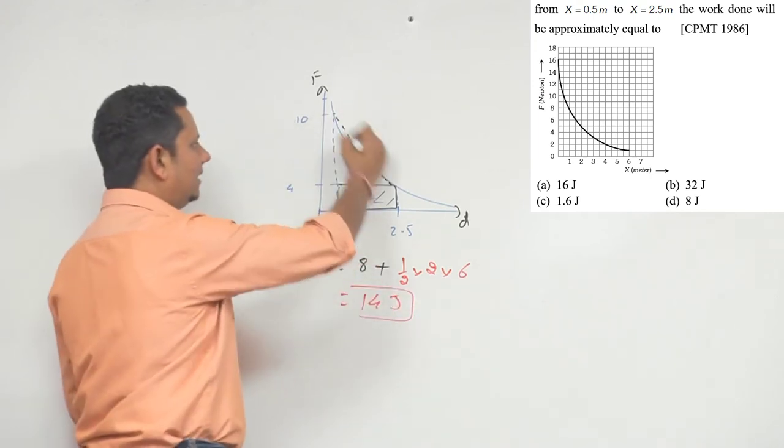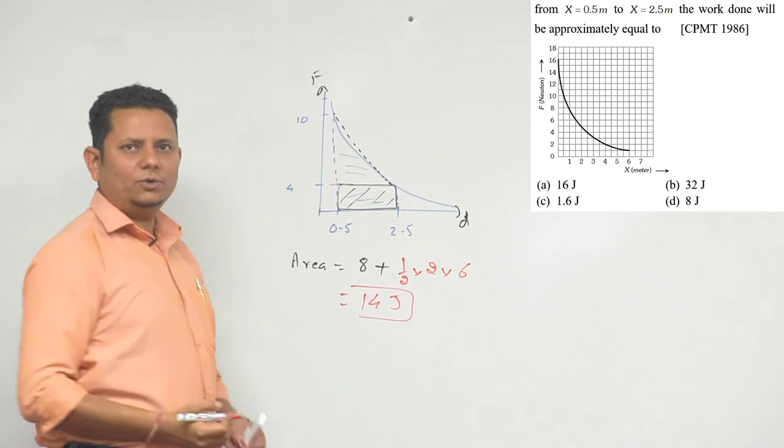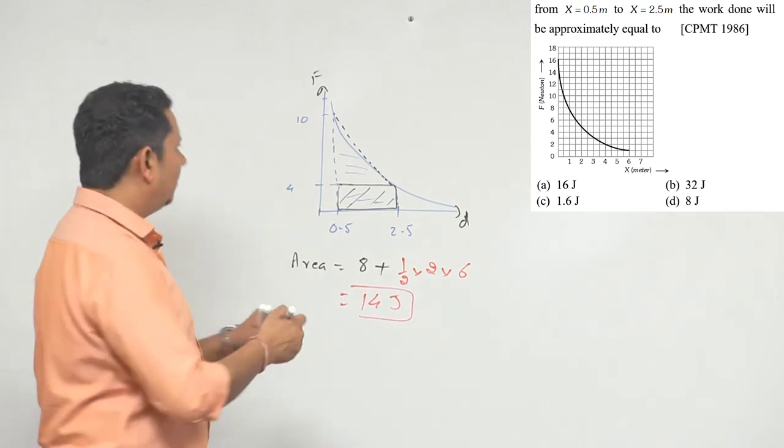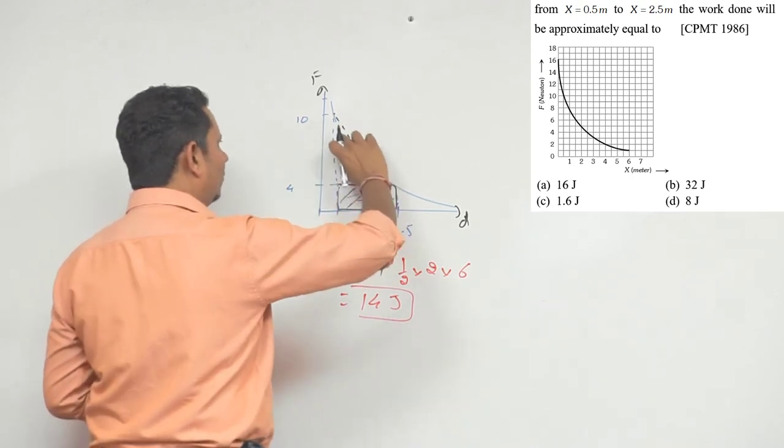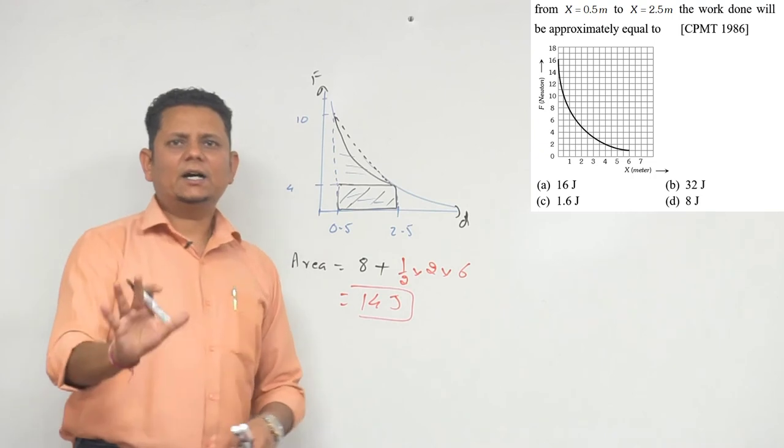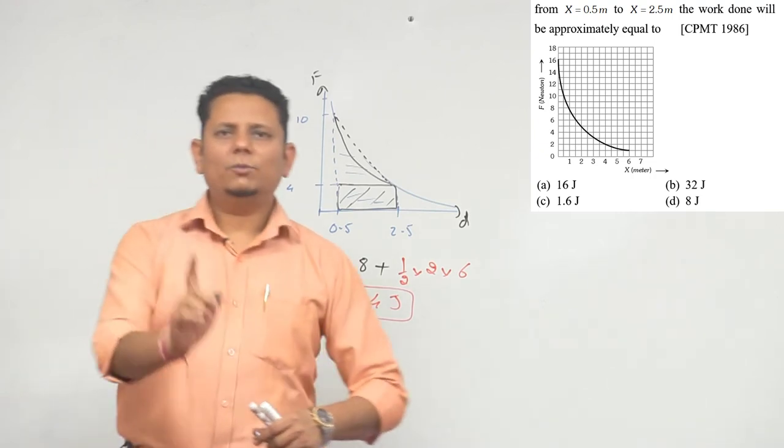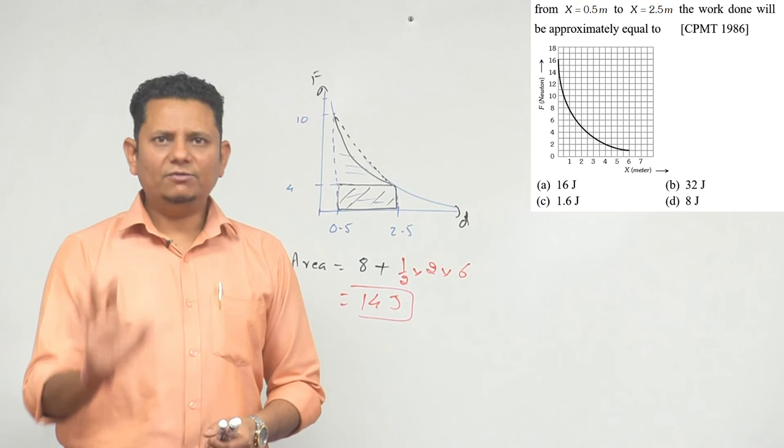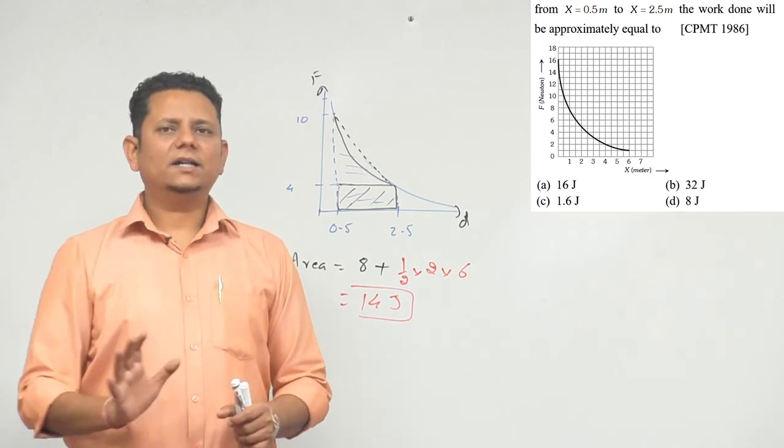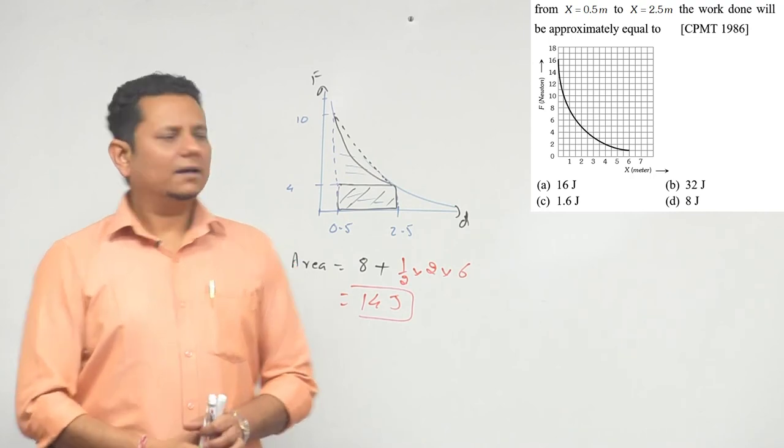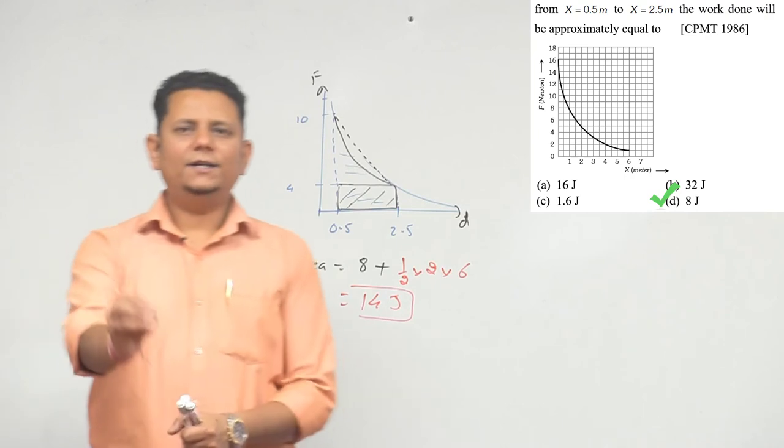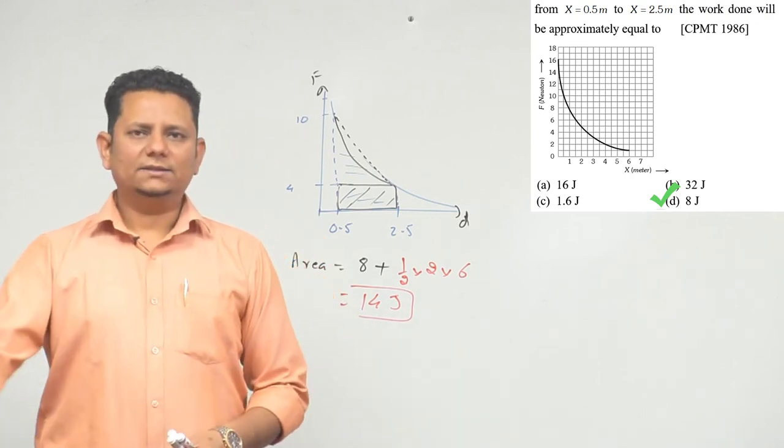Now, based on this, if we had a perfect trapezium area, it would be 14. But this graph curves inward, so this area will be less than 14. Based on this, looking at the four options, we can eliminate 32 and 16. Since we calculated 8 for the rectangular area and the total must be less than 14, the answer is 8 joules. So option D, 8 joules, is the right answer.